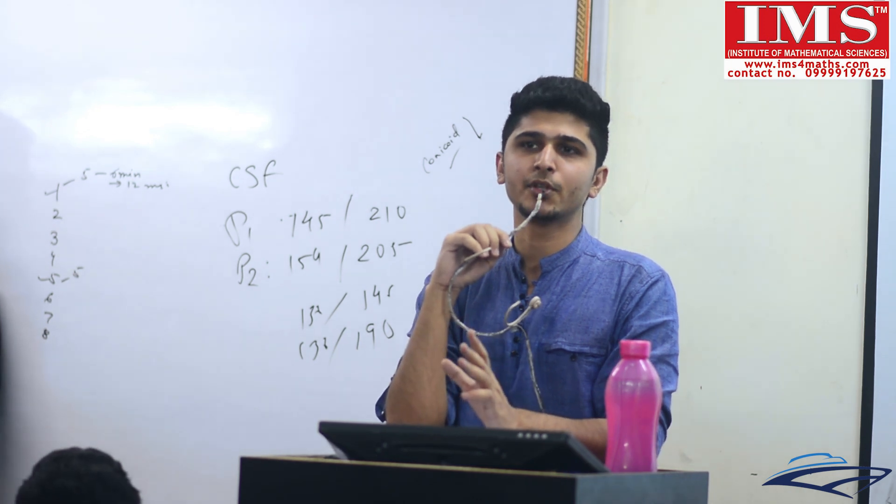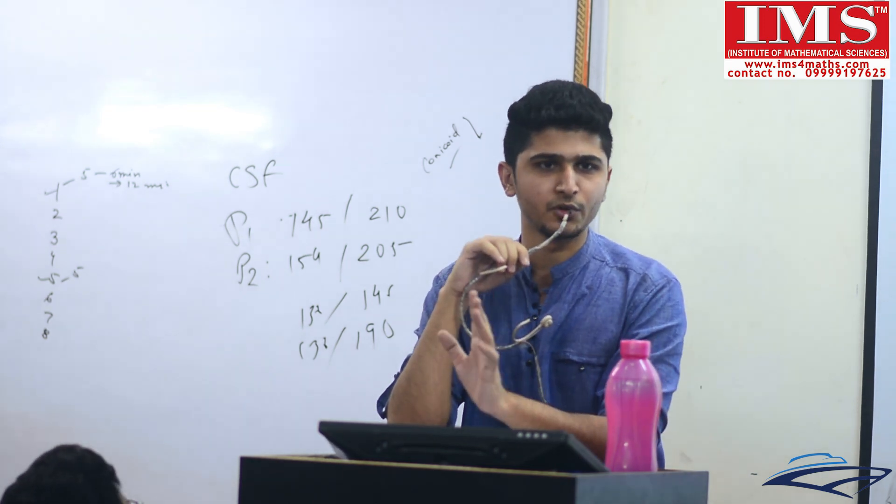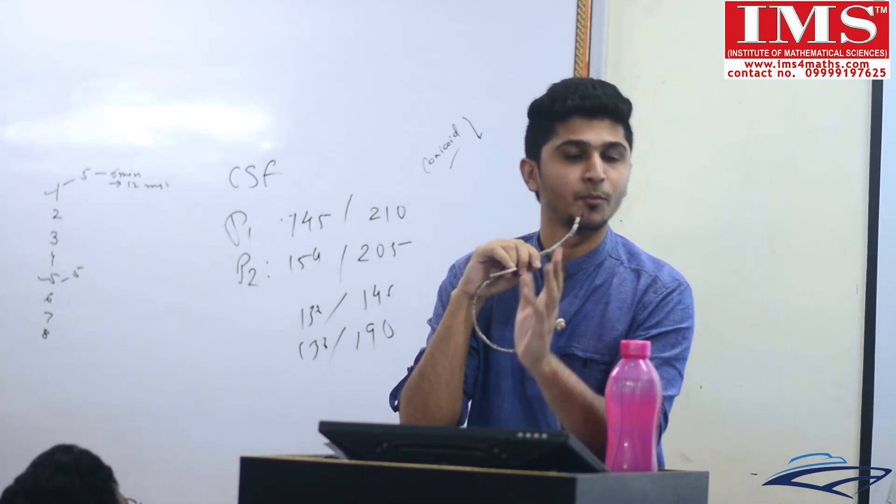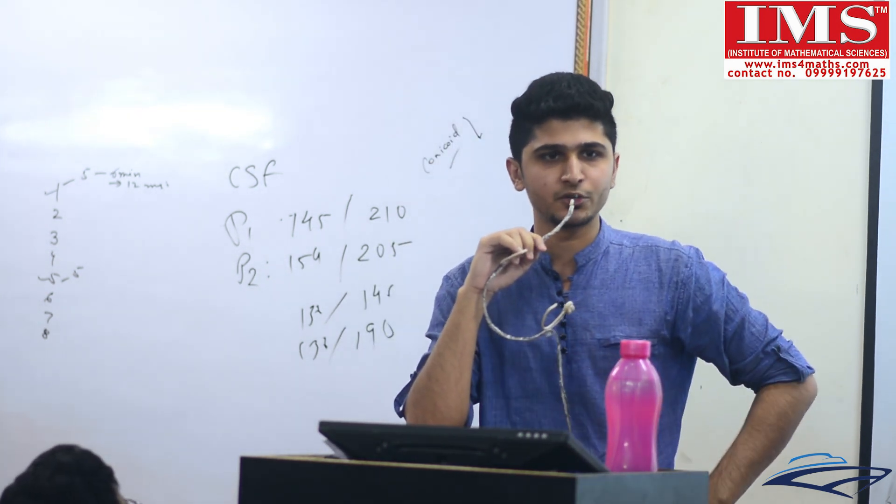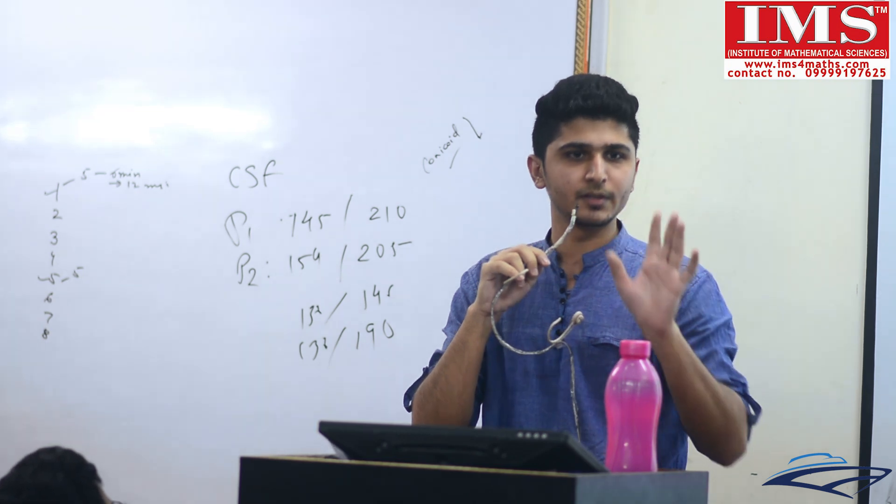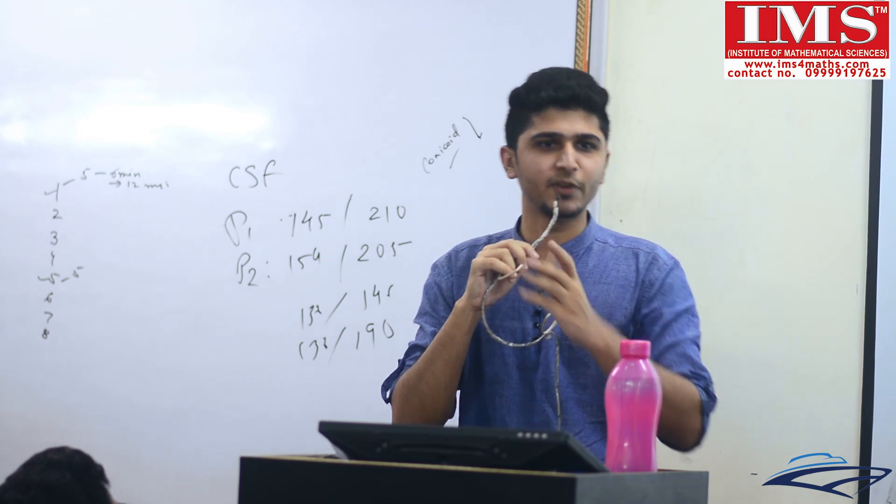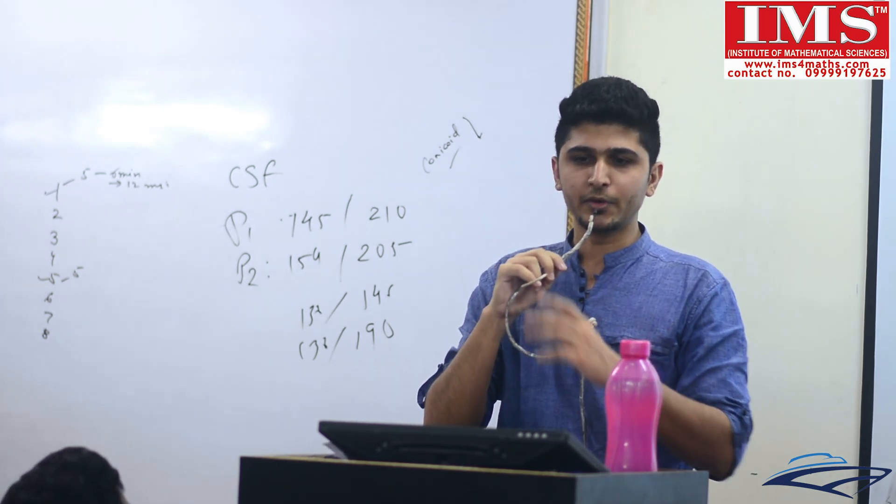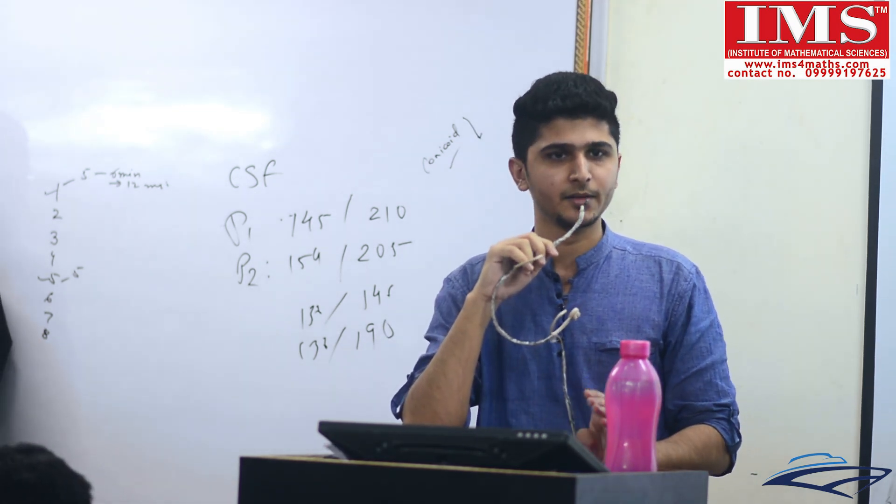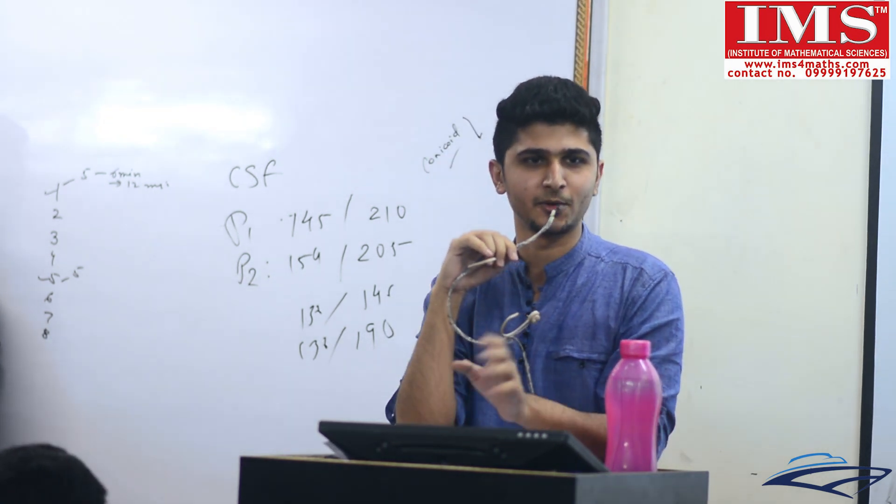In prelims you can target some topics. For polity you have to study only Laxmikant, you don't need any other notes or anything else. If you are comfortable in polity, last year around 14 questions were asked from polity. You can make sure that all 14 questions or around 12 or 11 questions is guaranteed correct. Similarly in economics, most of the people in engineering background are comfortable with economics and geography. You can make sure that in topics which you are comfortable with, your accuracy is higher. Art and culture if you want to skip, you can according to your comfort.